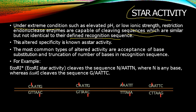This altered specificity is known as star activity. These enzymes cleave at certain sites which are not supposed to be cleaved but which seem identical to the defined recognition sequence. So they pretty much make a mistake due to extreme conditions such as elevated pH or low ionic strength. The most common types of altered activity are acceptance of base substitution and truncation of the number of bases in the recognition sequence.